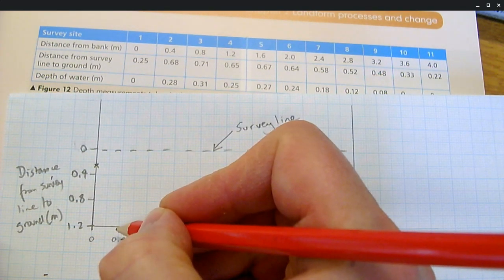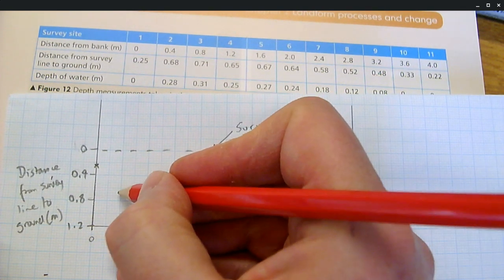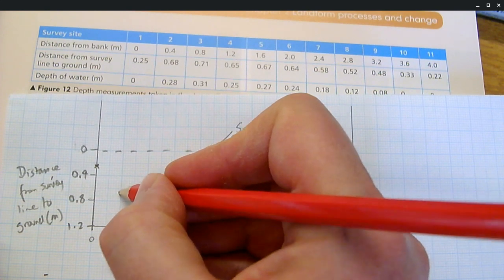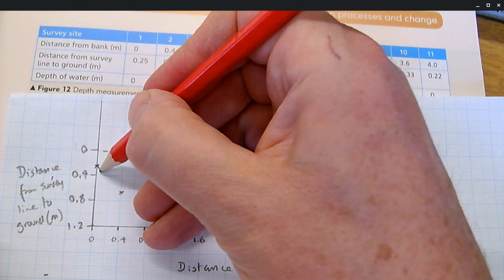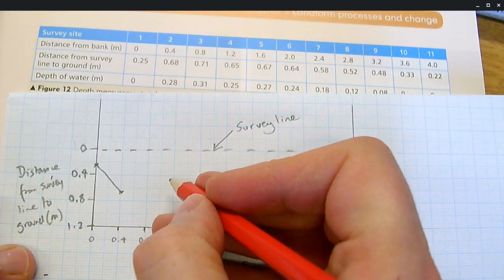Going across to 0.4, we're at 0.68. So this is going to be around here. Then we've got the first points of our cross-section. You can use a ruler to make it even neater.